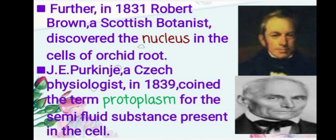Further, in 1831, Robert Brown, a Scottish botanist, discovered the nucleus in the cells of orchid root. J. Purkinje, a Czech physiologist, in 1839 coined the term 'protoplasm' for the semi-fluid substance present in the cell.